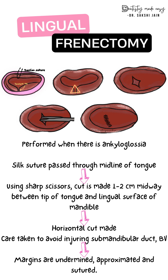Moving towards the technique: first, local anesthesia is given. A bilateral lingual nerve block is administered with local infiltration. The next important step is placing a silk suture, also known as the tongue traction suture, which is placed to improve visibility and control and to stabilize the tongue during the procedure. It is placed at the midway point of the tongue.